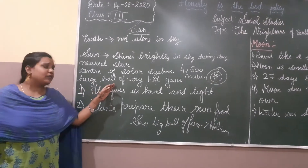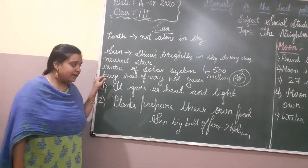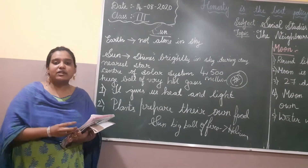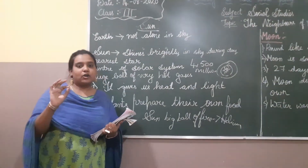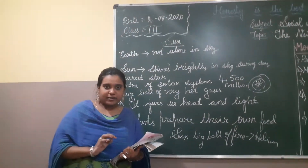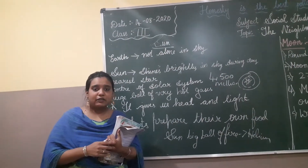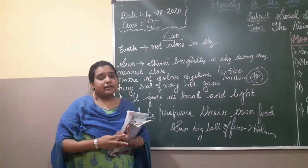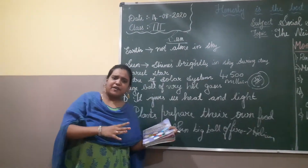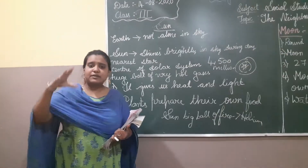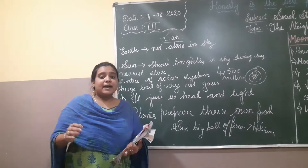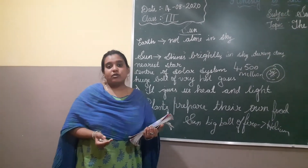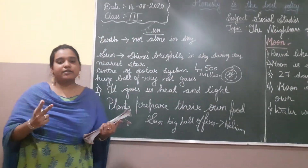The sun is a huge ball of very hot gases. Just imagine summer season at noon — how hot it is outside. The sun is very, very far away; it is billions of kilometers from earth. Earth is the third planet. Imagine how much hotter planets closer to the sun, like Mercury or Venus, must be — we certainly could not tolerate that heat.